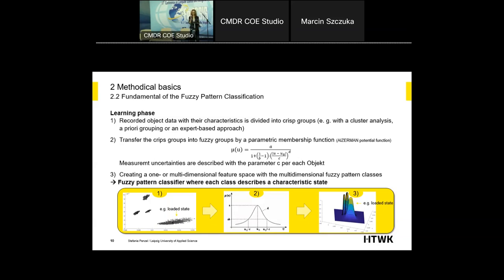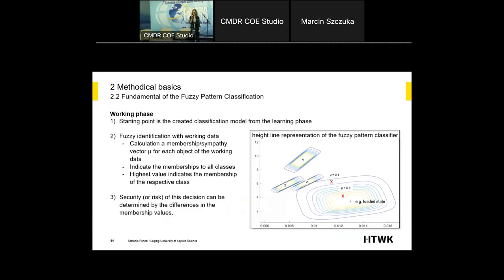That is the starting point for the working phase. In the working phase, there is a fuzzy identification with working data. You calculate a membership or sympathy vector for each object of the working data, which indicates the membership to all classes. The highest value indicates the membership of the respective class, and the security or risk of this decision can be determined by the difference in the membership values.